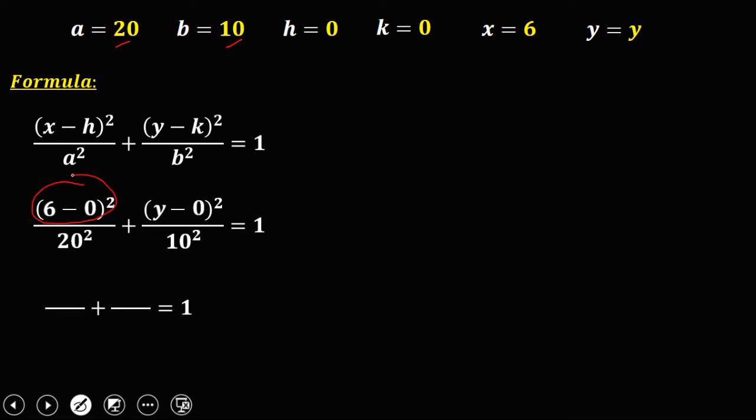So this one is y squared, 10 squared, that's 100. Now, to simplify an equation with fraction, just multiply the whole equation by the LCD. So 400 and 100, the LCD is 400.